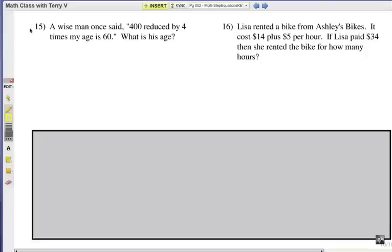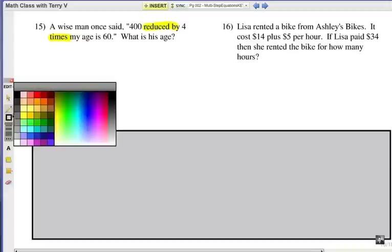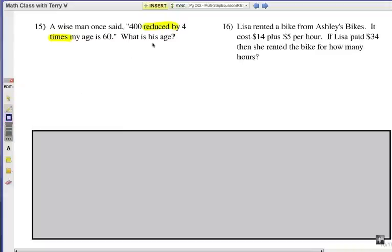Number 15. A wise man once said, 400 reduced by four times my age is 60. What is his age? Well, let's look at some key words here. Reduced by, if you look at that, most of the time that means subtraction. You're taking something away. And four times my age, of course, is multiplication. And what is his age? So if we focus on the question itself, age, let's go ahead and call that A. Make it pretty obvious here.